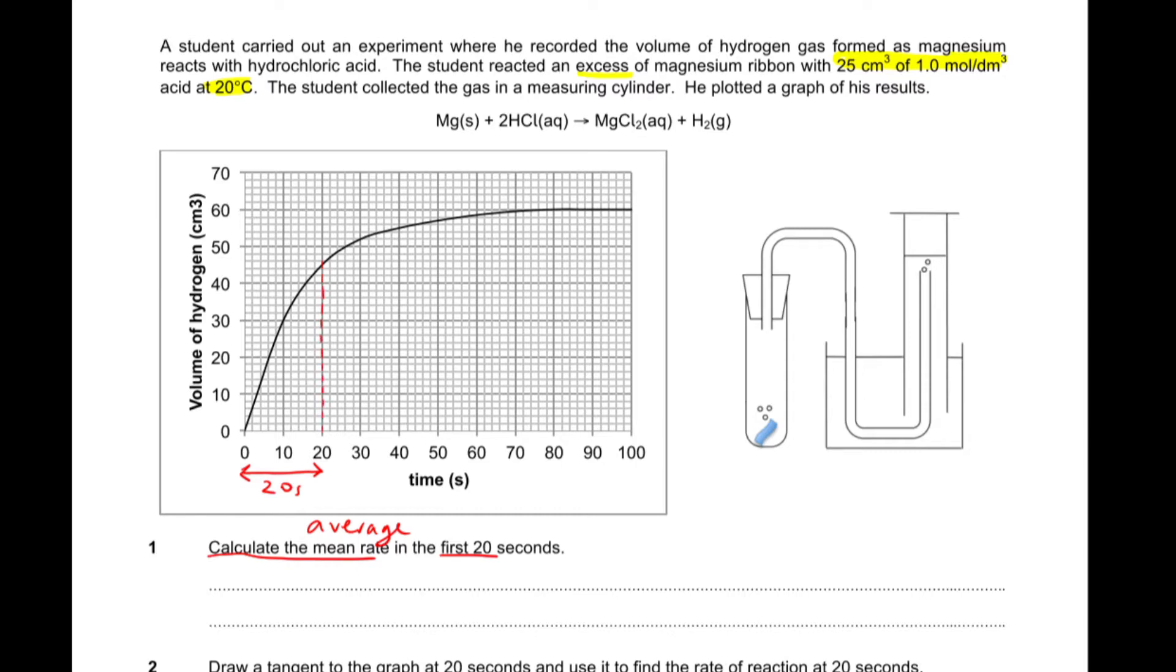I'm going to read down to 20 seconds, and then we're going to read across from this graph where the line meets. That comes out to be 45 centimeters cubed. So, the average rate is the gas produced divided by the time taken. The gas produced was 45 centimeters cubed in 20 seconds. That comes out to be 2.25 centimeters cubed per second. And you do need to include that unit.